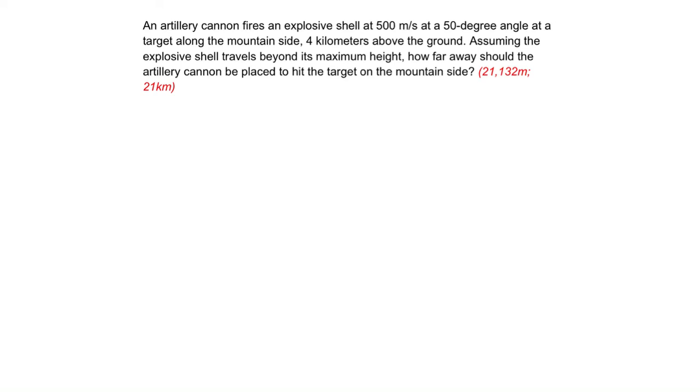Okay, so in this problem, we're told that an artillery cannon fires an explosive shell at a velocity of 500 meters per second at a 50 degree angle above the horizontal at a target along the mountainside, which is 4 kilometers or 4,000 meters above the ground. Assuming that the shell travels beyond its maximum height, how far away should the cannon be placed to hit the target on the mountainside?